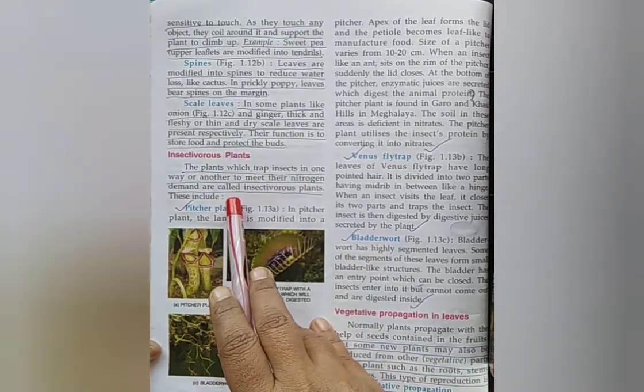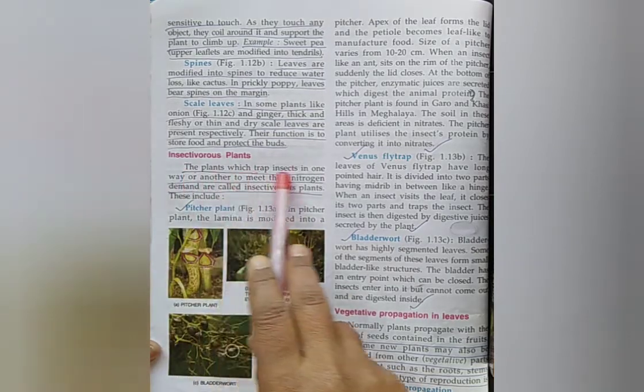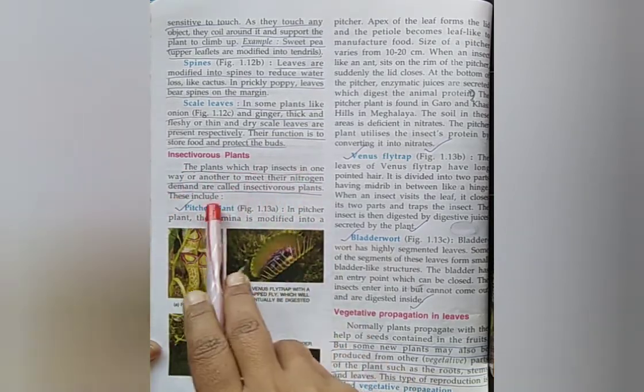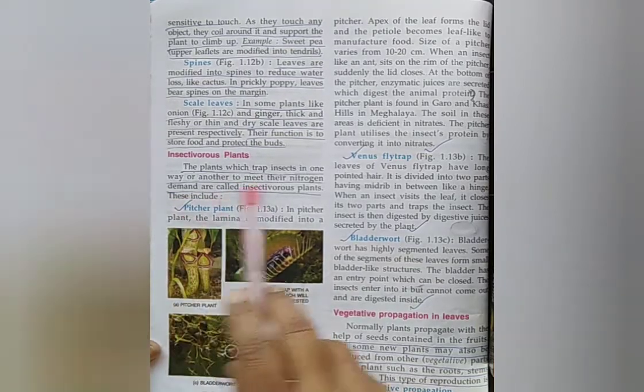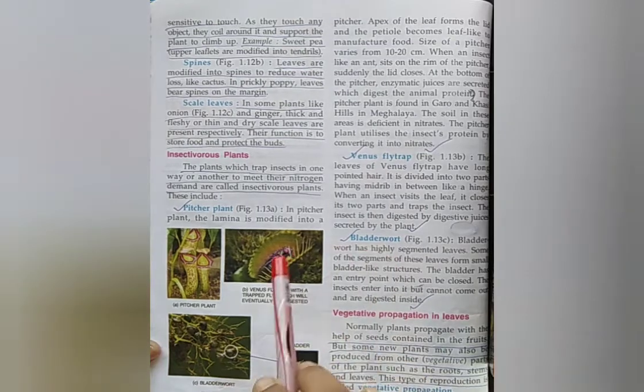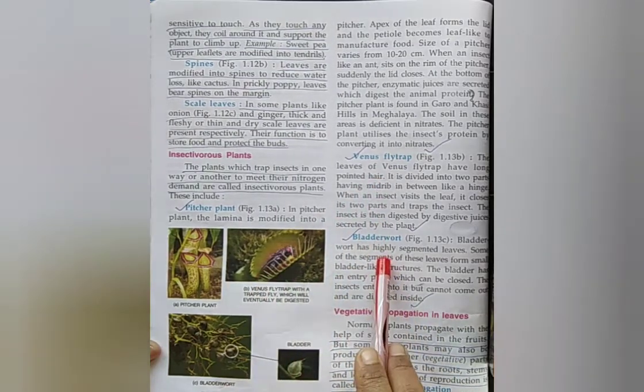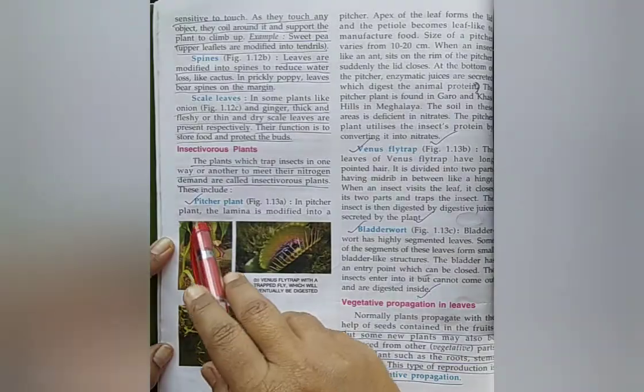Which plants are called insectivorous plants? Examples: Pitcher plant, Venus flytrap, bladderwort. Insectivorous plants examples. Next question: Insectivorous plants examples. Description: Pitcher plant, Venus flytrap, bladderwort.